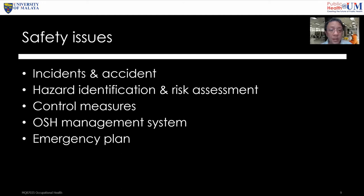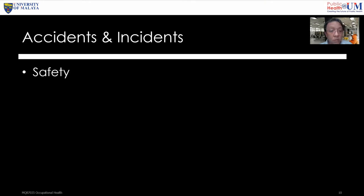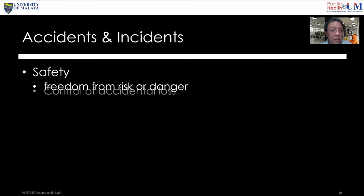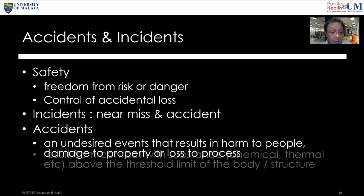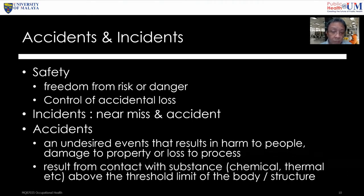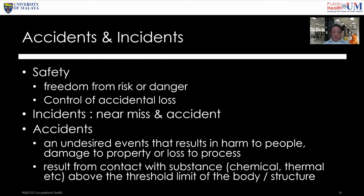So what is the difference between an incident and an accident? When we talk about safety, we refer to freedom from risk or danger and control of accident loss, near miss, or accidents. An accident is an undesirable event that results in harm to people, damage to property, or loss — contact with a substance, chemical, or thermal energy above the threshold limit of the body or structure.